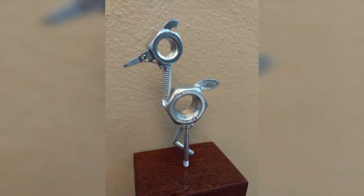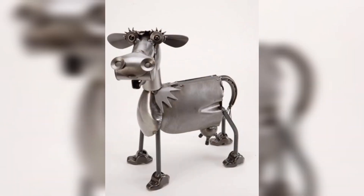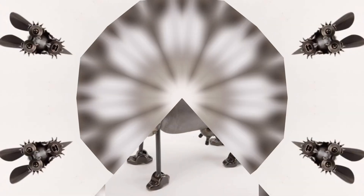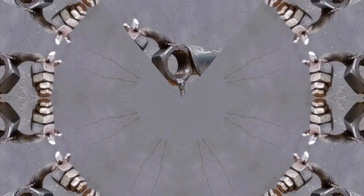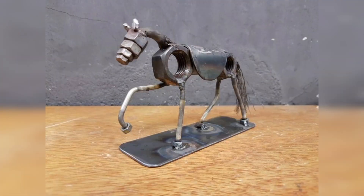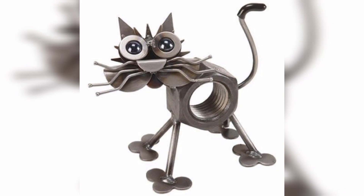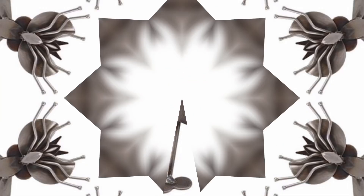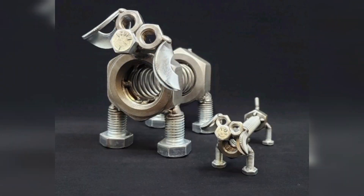What is the cheapest metal for sculpture? Tin is one of the most versatile metals for artwork and one of the cheapest materials on this list. Tin is inexpensive and widely available, and it is very easy to recycle into art.